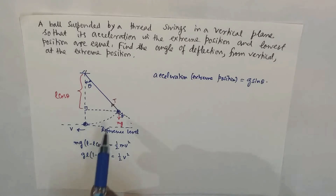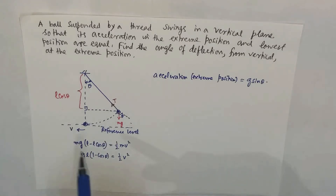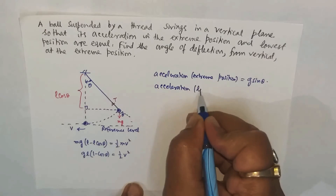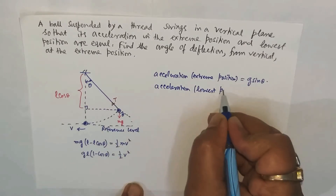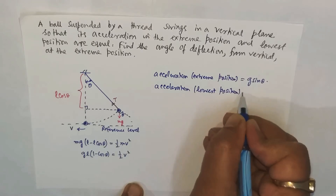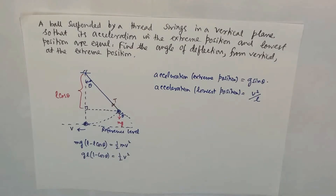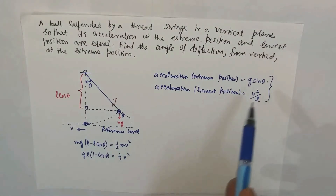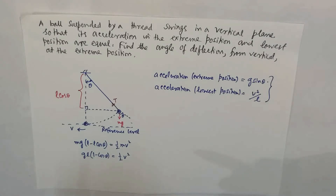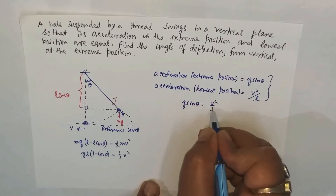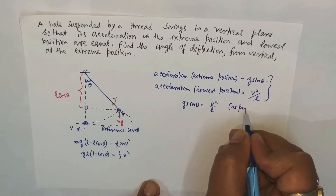Since the particle is in circular motion, the acceleration at the lowest position is the centripetal acceleration v squared by L. As per the question, the two accelerations are identical, so g sin theta equals v squared by L.